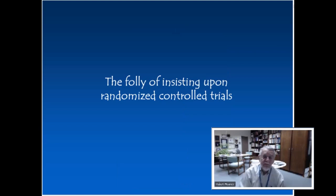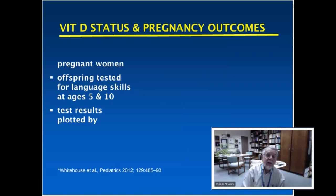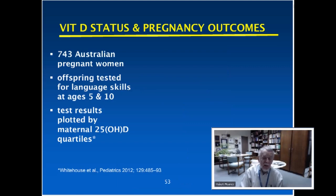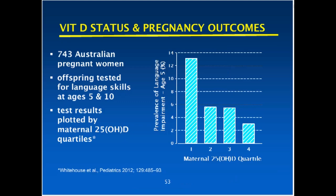My next topic is the foolishness of insisting upon randomized controlled trials. Here is a study published last year in the journal Pediatrics. It studied 743 Australian pregnant women whose babies went on to school, and looked for language skills at age 5 and age 10. Results were recorded as a function of maternal 25-hydroxyvitamin D quartile — first, second, third, or fourth quartile from low to high. In the lowest maternal vitamin D quartile, 13% — about one in seven kids — had some degree of language impairment in their first year in school, whereas those in the highest quartile, only 3% did.